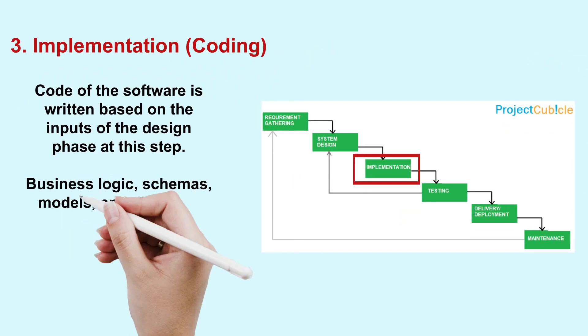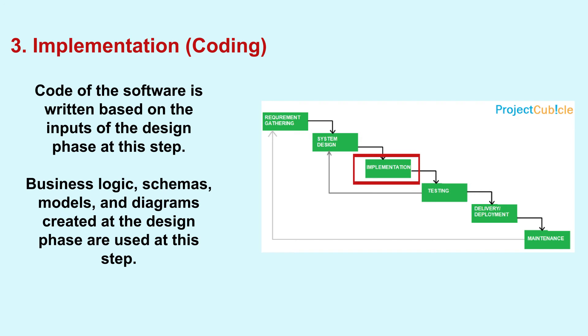In the implementation phase, the code of the software is written based on the inputs of the design phase. The business logic, schemas, models, and diagrams created at the design phase are used at this step.